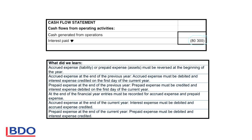What did we learn today? Accrued expense is a liability and prepaid expense is an asset, and both must be reversed at the beginning of the next financial year. Accrued expense at the end of the previous year had a balance on the credit side, so you will debit accrued expense to close off the account and credit your interest expense account. Prepaid expense was an asset with a debit balance, so you credit the interest expense account to close off prepaid expense and debit interest expense for the current year.